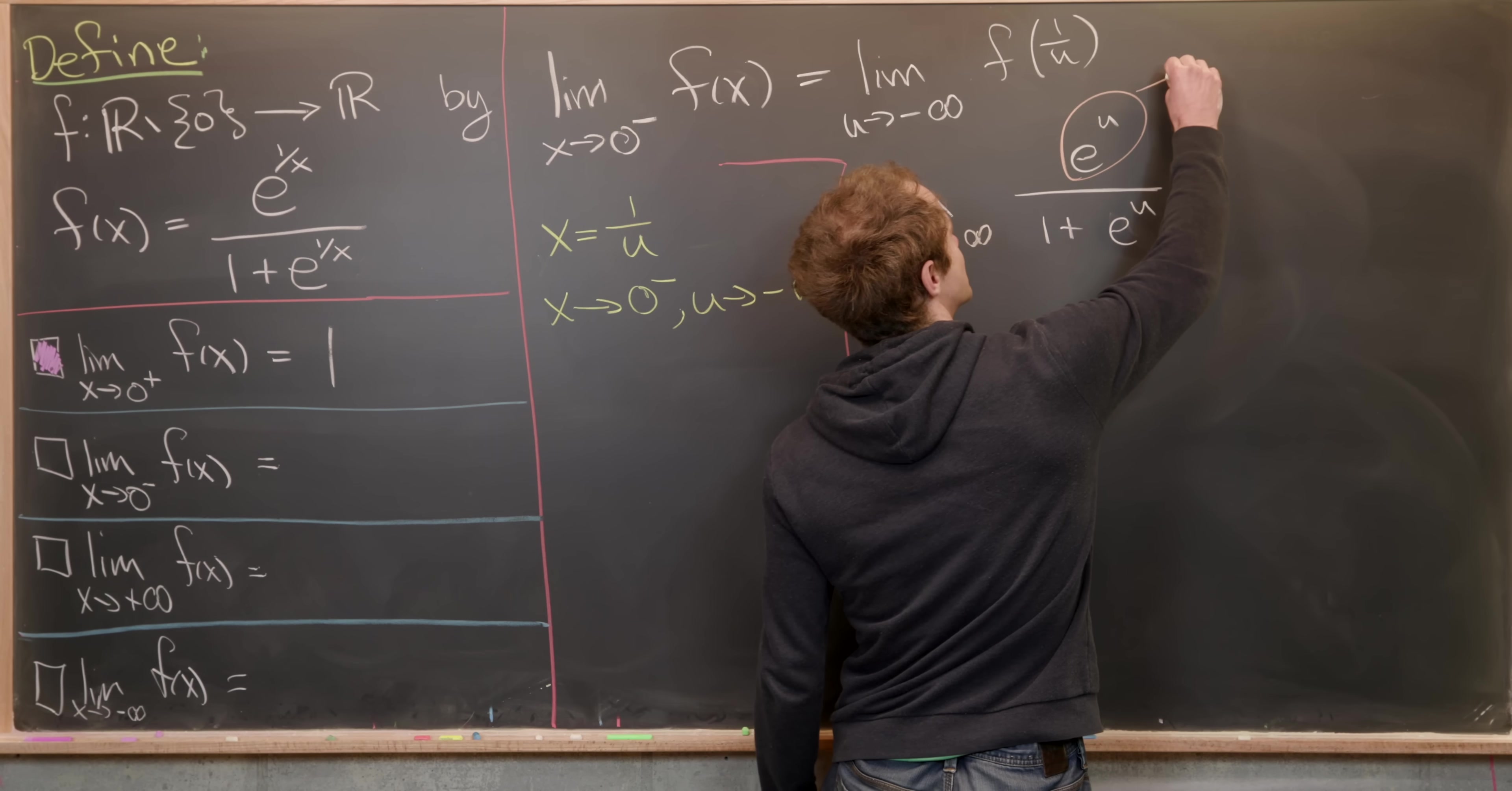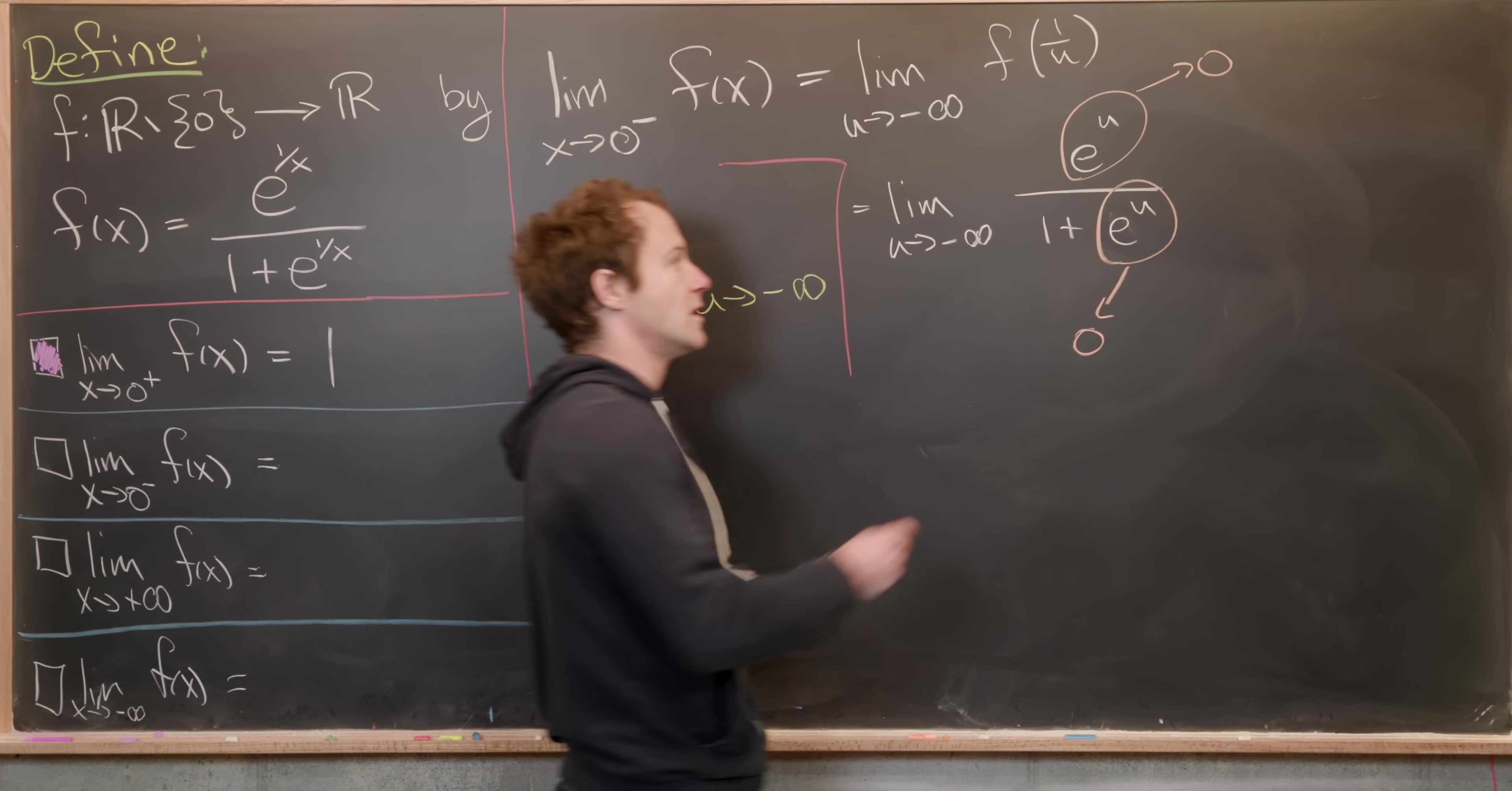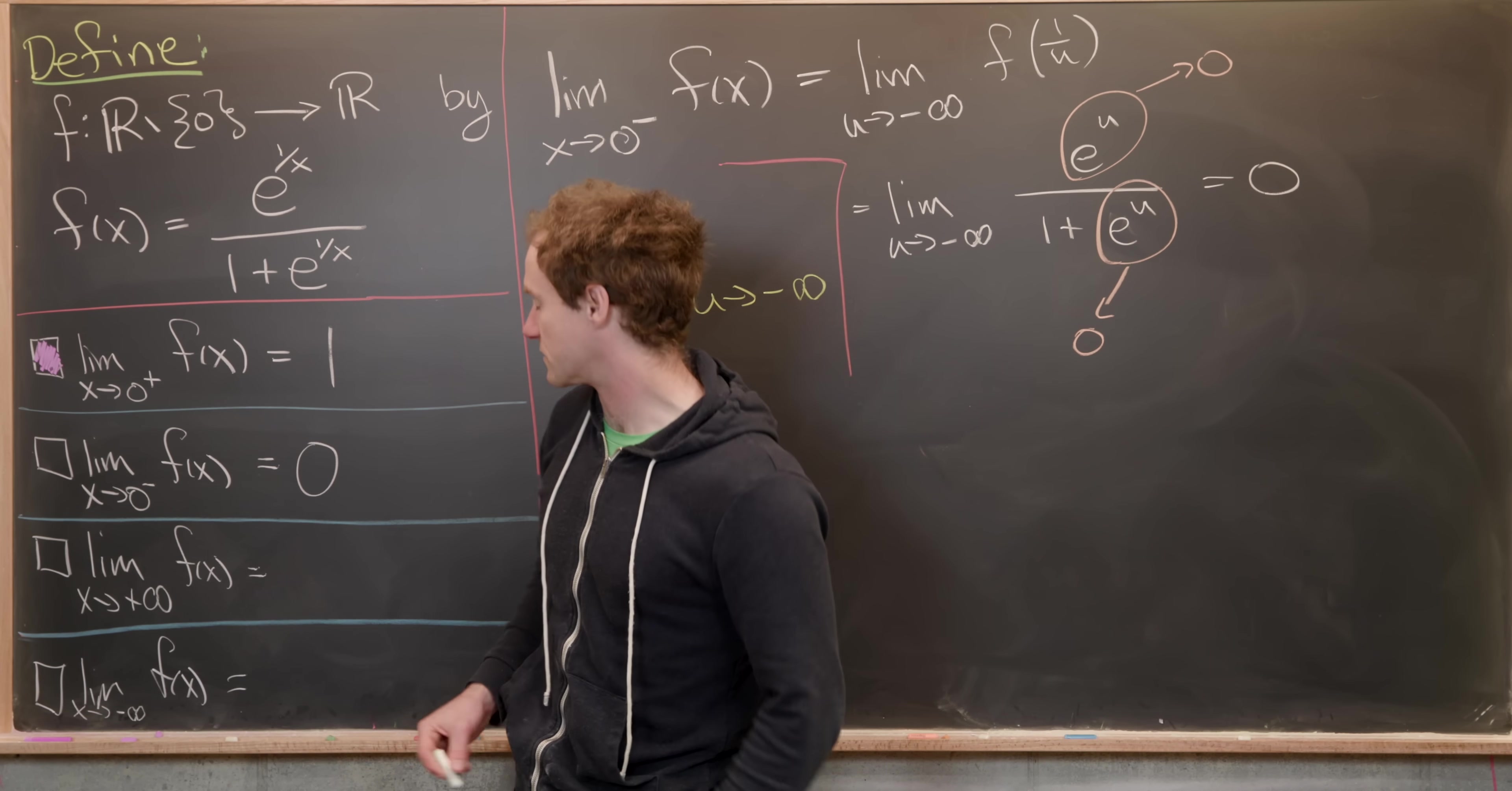So we've got this object is approaching zero. This object is approaching zero. But the one is a constant, it's just staying one. So we end up with zero over one. Or in other words, we end up with zero. So here for this left handed limit, we have zero.